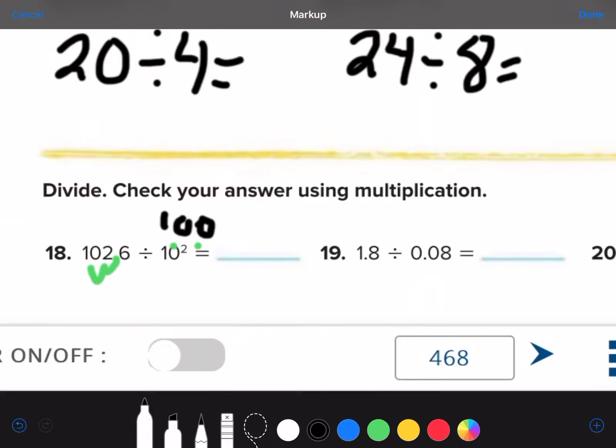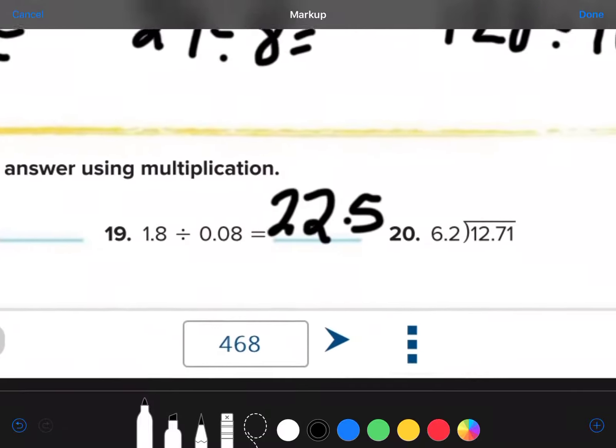Same with 19. We have 1.8 divided by 1. Or, excuse me, 0.08. Ooh. How many spots are we going to have there? This one's a little tricky. So, we are going to have it. This one's really weird. So, this one is 22.5. And, we didn't cover that. So, there's the answer for that one.